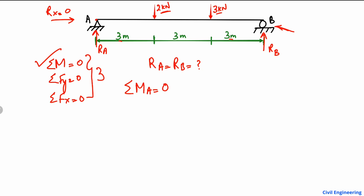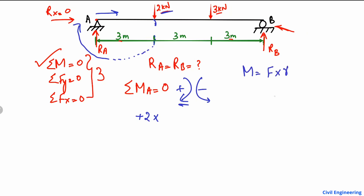Our sign convention: clockwise moment is taken as positive and anticlockwise moment is taken as negative. We must use this assumption consistently throughout the problem. Starting from the left end, the first load of 2 kilonewtons creates a clockwise moment about point A, so it is positive: plus 2 multiplied by the moment arm of 3 meters.